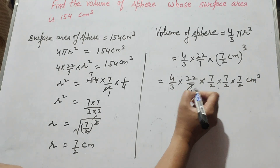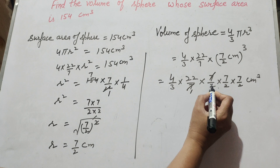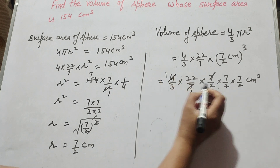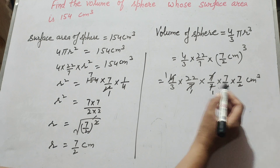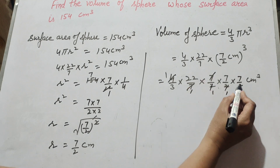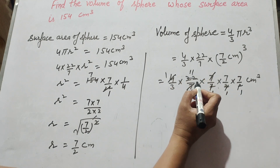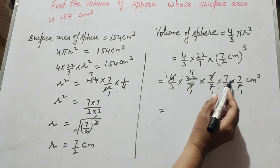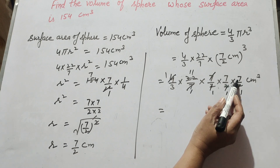The 7 in the denominator and 7 in the numerator cancel. The 4 in the numerator and 4 in the denominator cancel. Then 2 and 22 cancel — 2 ones are 2, and 11 twos are 22 — leaving 11. So it is equal to 11 times 7 which is 77, and 77 times 7 is 539.